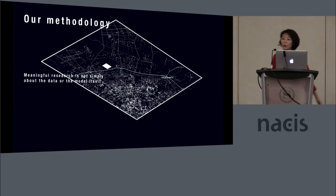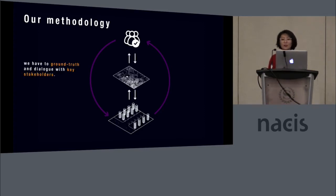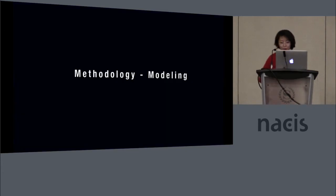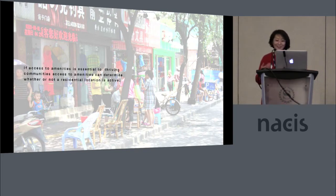I think mixed methods is actually a really important approach for cartographic research in general. We believe that meaningful research is not simply about the data or the model itself, but also putting things into context. To really have your cartographic research make an impact on policy decisions that can ultimately influence urban space, you need to talk to different stakeholders and ground-truth your data to develop a broader, comprehensive understanding of a particular issue.